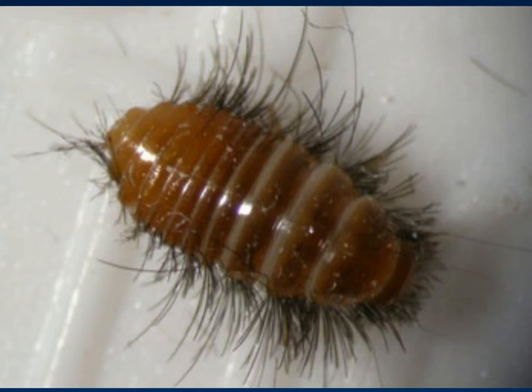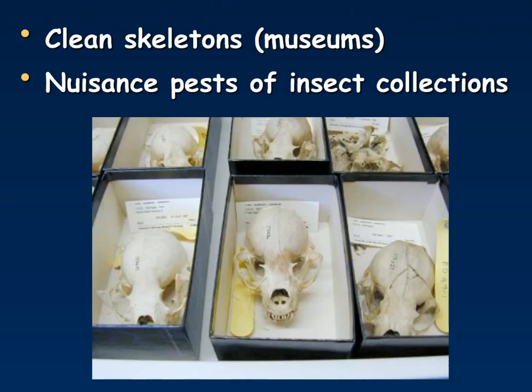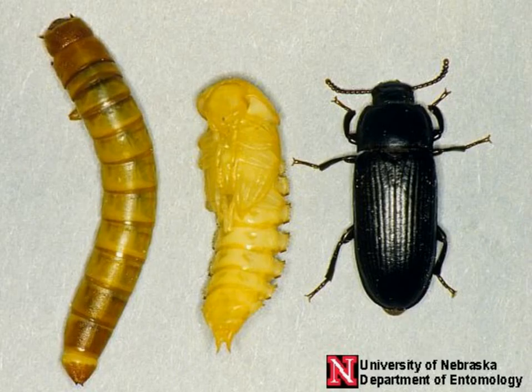Here we see an immature stage of a dermestid beetle. Dermestids can be very helpful in the museum industry because they can clean skeletons. However, they can be quite a nuisance pest for entomologists because they can destroy insect collections. Therefore, we usually have to put some sort of repellent, such as a mothball chemical, in with our insect collections to prevent damage. Finally, here is a picture of a mealworm, also attracted to a corpse during the third wave — on the left is the larvae, then the pupa, and the adult is actually a black beetle.